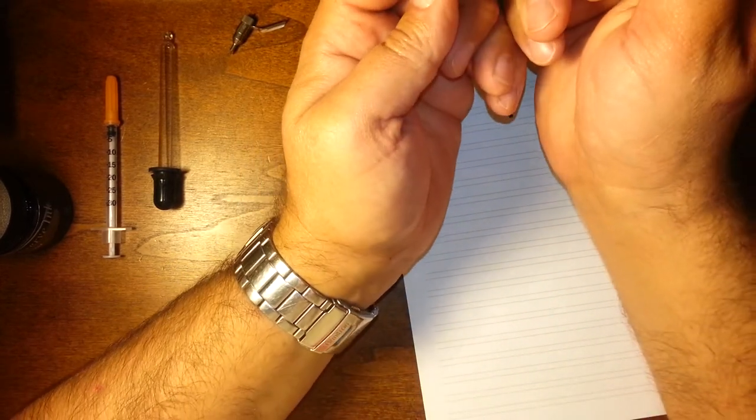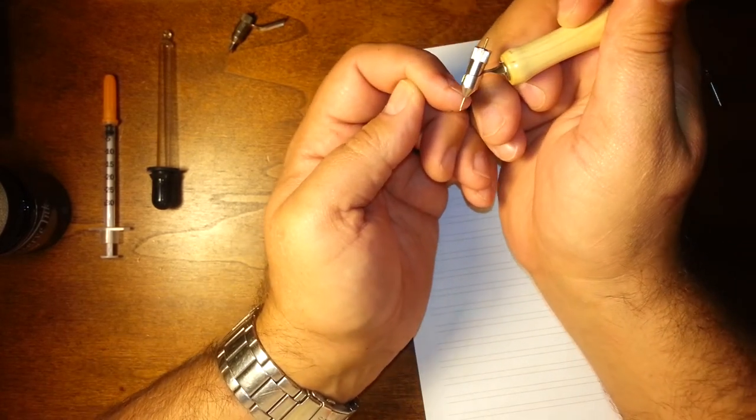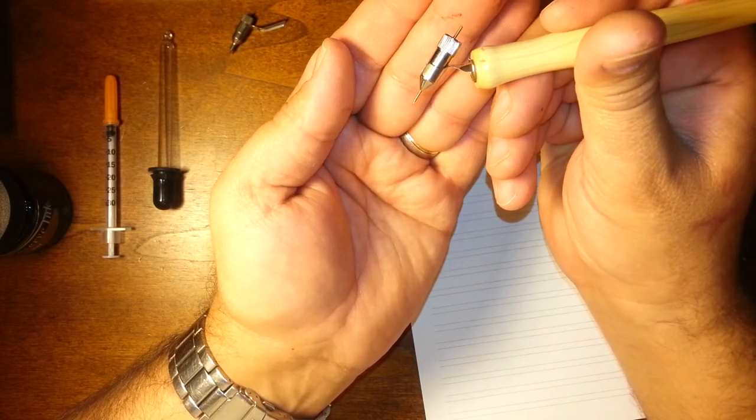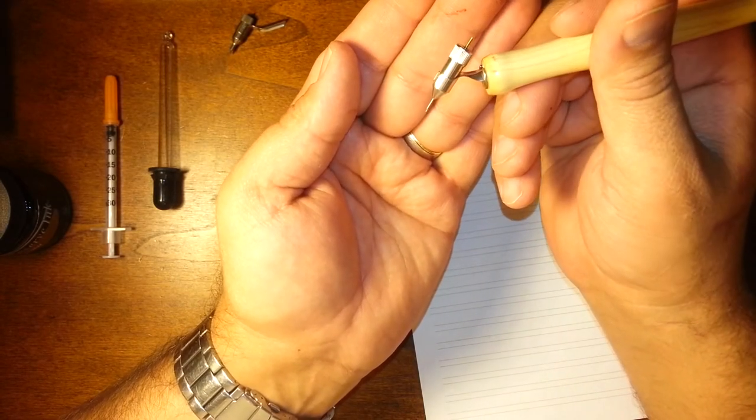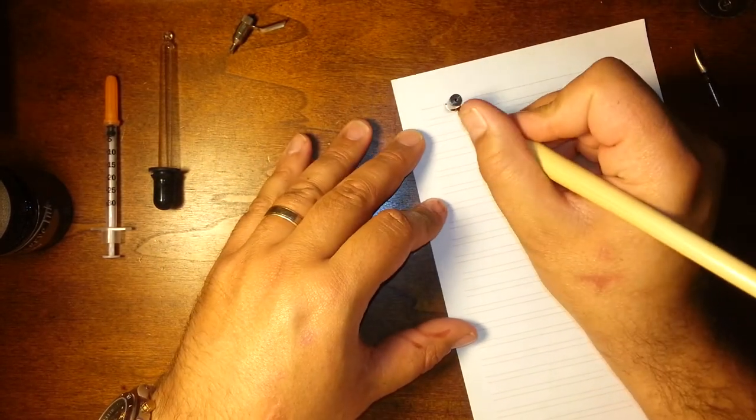And they've got a sharp pointed tube here at the end, just like these two. And you can fill an ink reservoir more like a modern fountain pen than this is. And you can write. And so I thought that must be what these are.